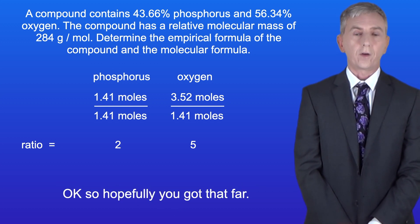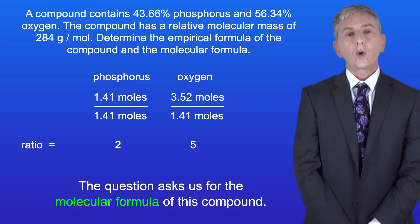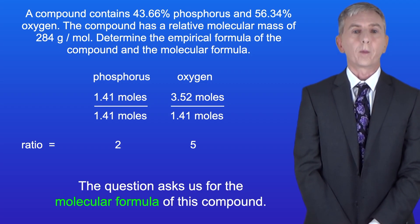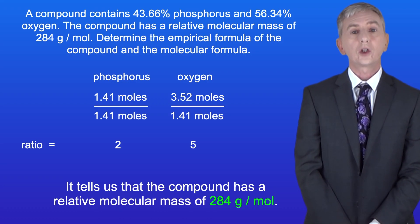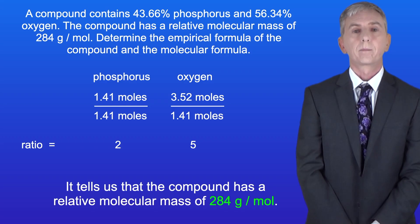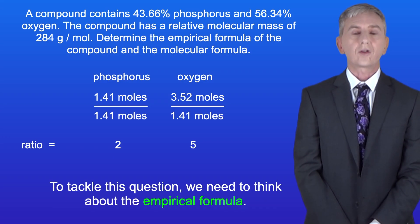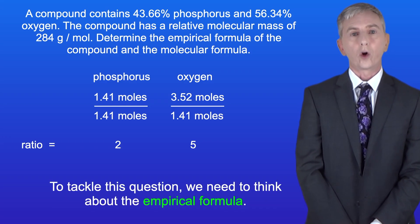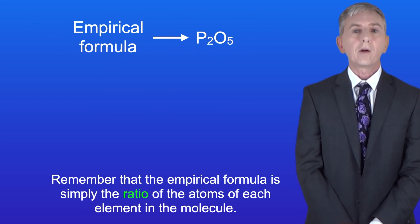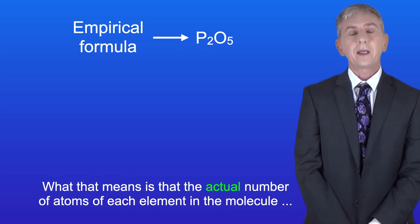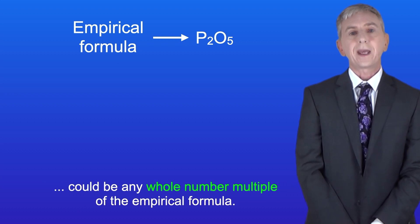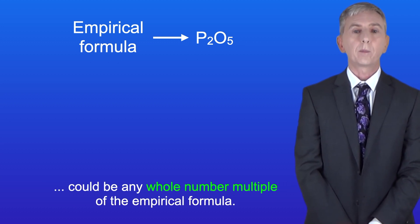Hopefully you got that far. Now the question asks us for the molecular formula of this compound, and it tells us that the compound has a relative molecular mass of 284 grams per mole. To tackle this question we need to think about the empirical formula. Remember that the empirical formula is simply the ratio of the atoms of each element in the molecule. What that means is that the actual number of atoms of each element in the molecule could be any whole number multiple of the empirical formula.